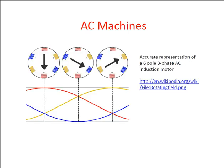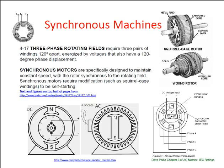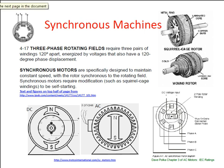An accurate representation of a six-pole three-phase AC induction motor. For a synchronous machine, a three-phase rotating field synchronous motor requires three pairs of windings 120 degrees apart, energized by voltages that also have 120 degrees phase displacement. Synchronous motors are specially designed to maintain constant speed. To fit the rotor synchronously to the rotating field, synchronous motors require modifications such as squirrel cage windings to be self-starting.